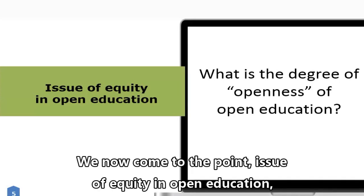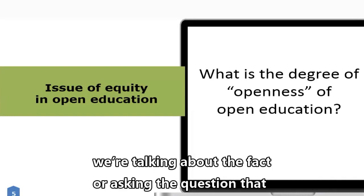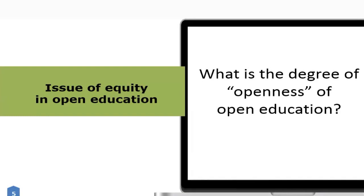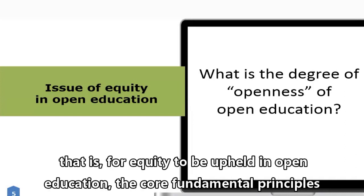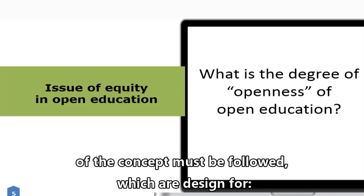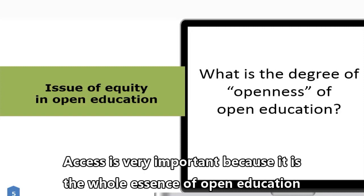We now come to the point issue of equity in open education. When we talk about equity in open education, we are asking the question: what is the degree of openness of open education? For the benefits of open education to be maximally derived by all — that is, for equity to be upheld in open education — the core fundamental principles of the concept must be followed, which are designed for access, agency, ownership, participation, and experience.